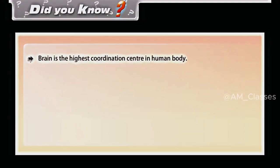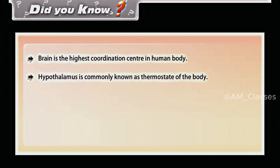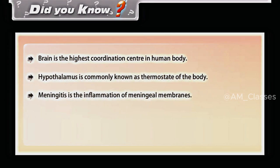The brain is the highest coordination center in the human body. The hypothalamus is commonly known as the thermostat of the body. Meningitis is the inflammation of meningeal membranes. The cerebellum is also known as the little brain.